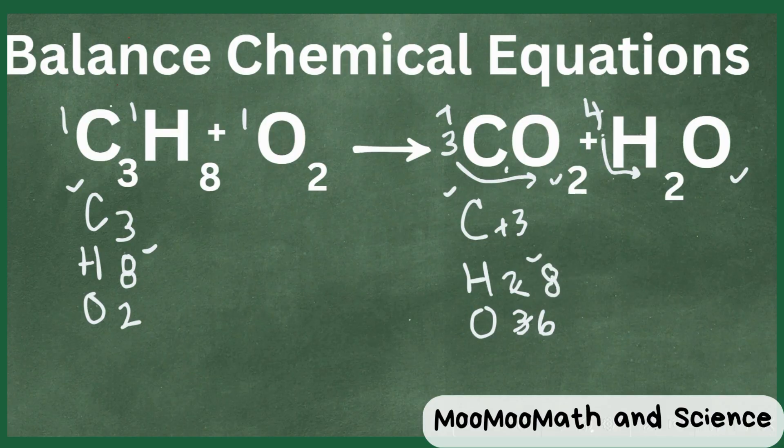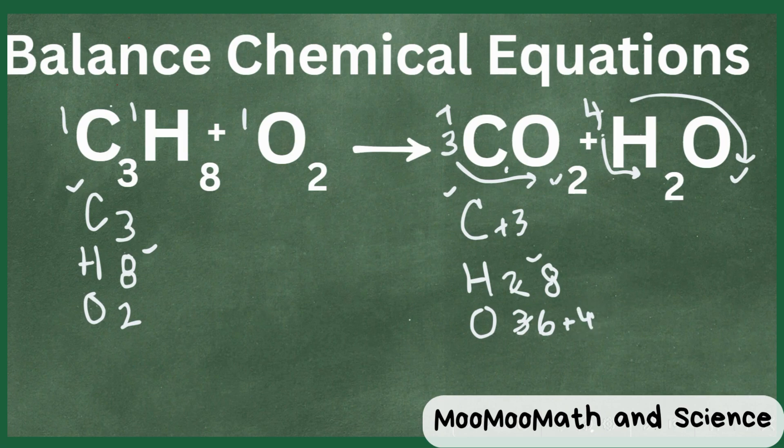Hydrogen is looking good, but we need to multiply 4 times the 1 here. So we need to add 4 to the oxygen. 6 plus 4 is now 10. So oxygen is now out of balance.